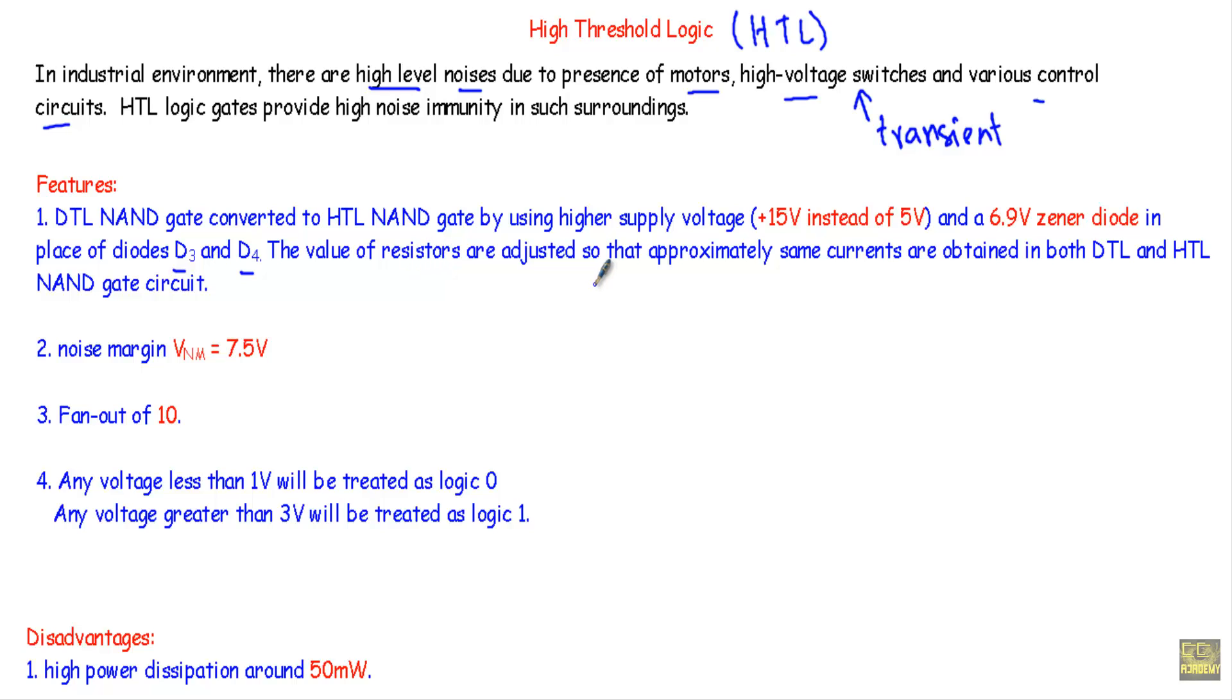And we have to adjust the value of the resistors in the DTL logic circuits so that we can convert that DTL logic circuit into HTL logic circuit and we get approximately the same currents obtained from the DTL and HTL NAND gate. We will use a zener diode in place of the diodes D3 and D4 in a DTL gate.